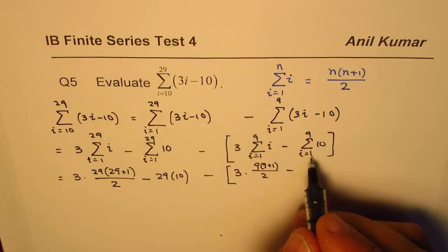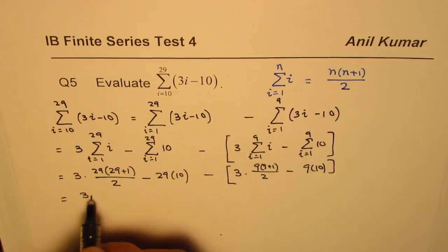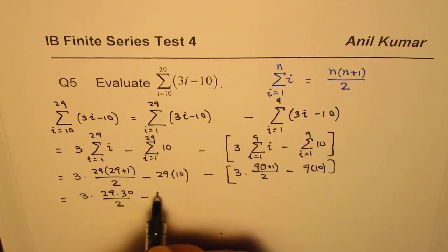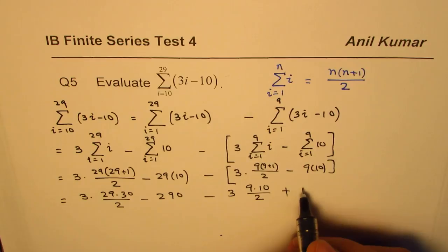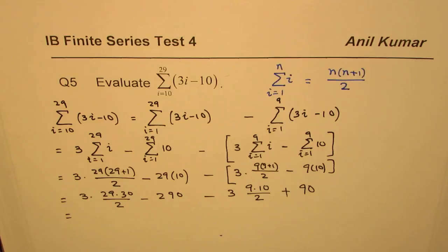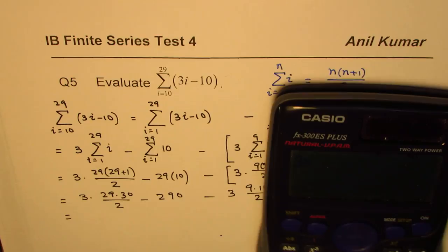So that gives us 3 times 29 times 30 divided by 2, minus 290, minus let's write down 3 times 9 times 10 divided by 2. Minus minus becomes plus, plus 90. So that is what it is. Now we can actually use the calculator to find the answer.